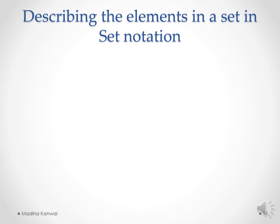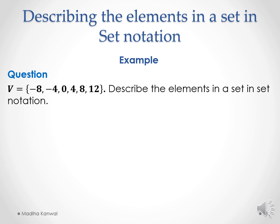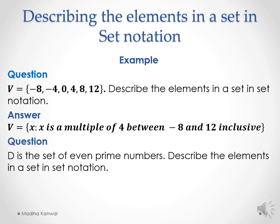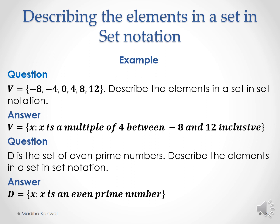The third way of describing a set is using set-builder notation. For example, if V = {−8, −4, 0, 4, 8, 12} and you are asked to describe in set notation form, the answer is V = {x | x is a multiple of 4 between −8 and 12 inclusive}. Inclusive means −8 and 12 are also part of the set. In another question, if D is the set of even prime numbers, then D = {x | x is an even prime number}.